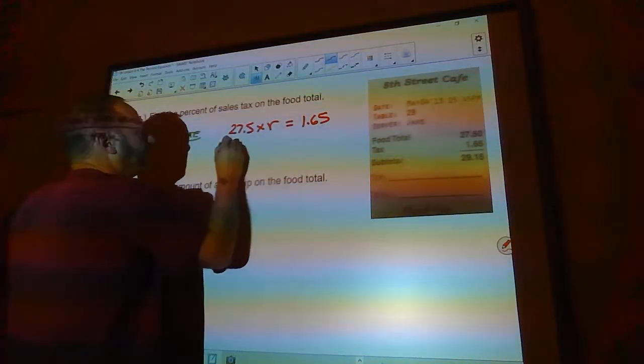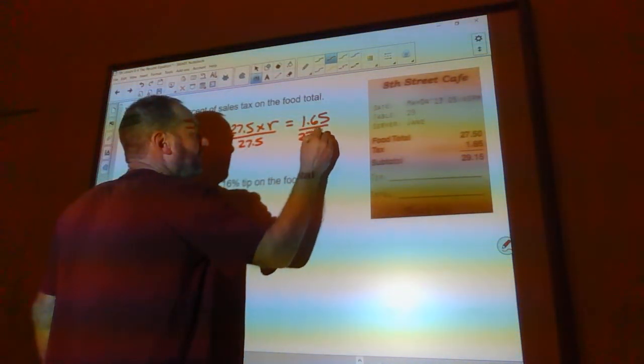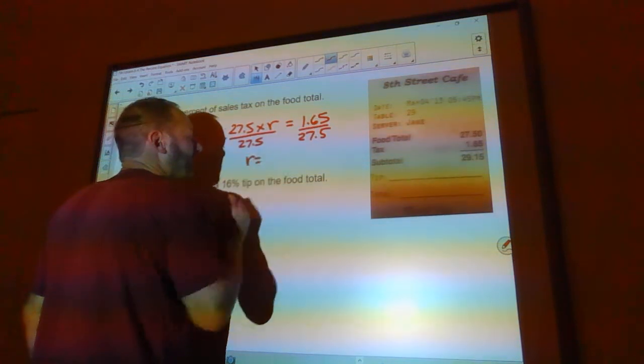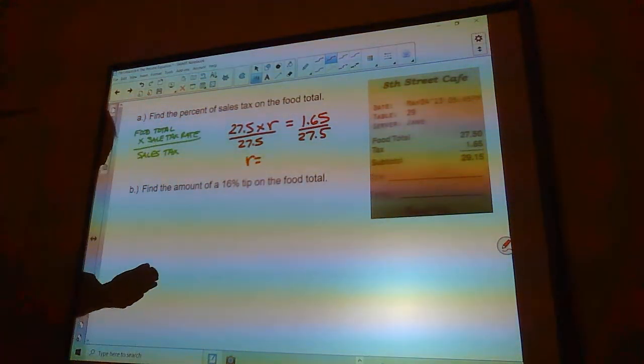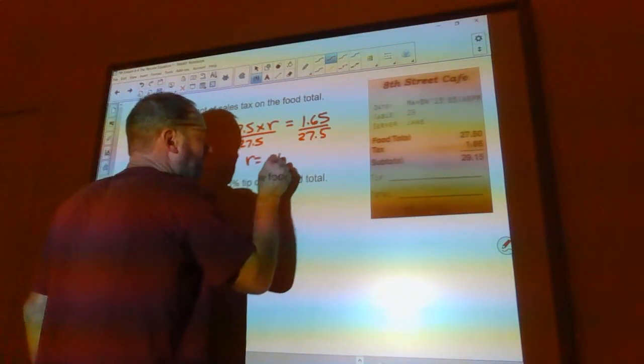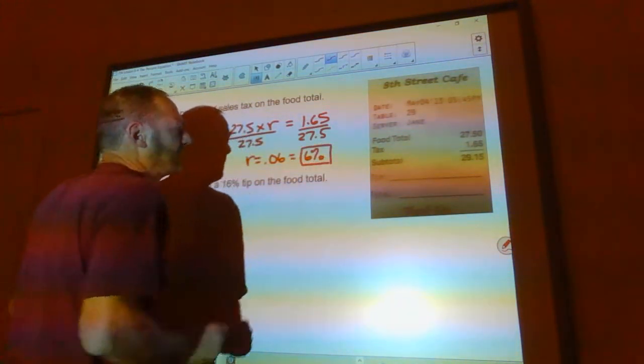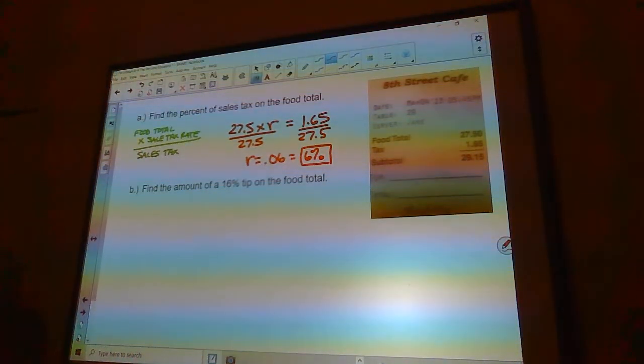Okay, so I'm going to take this and I'm going to divide by 27.5, and my tax rate is going to be 1.65 divided by 27.5. It's going to be 0.06, which is 6%. So this person paid 6% tax on the food.